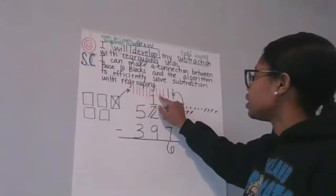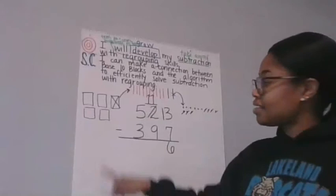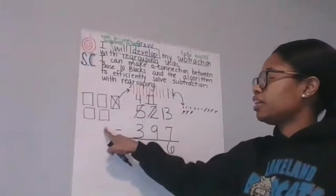So let's count. One, two, three, four, five, six, seven, eight, nine, ten, eleven. So this one now becomes an eleven. But I can't forget that I took away one of those hundreds. So now, this five becomes a four. Because I have four hundreds left.